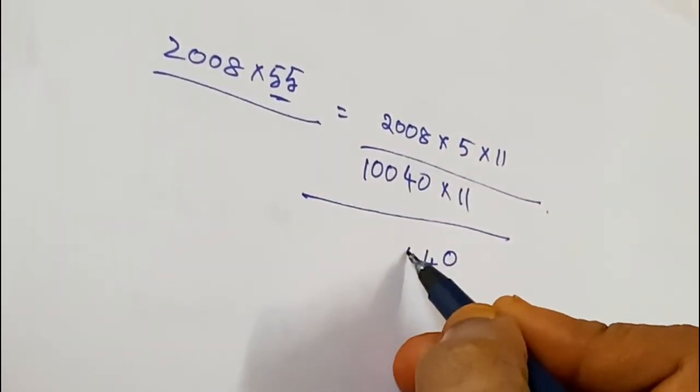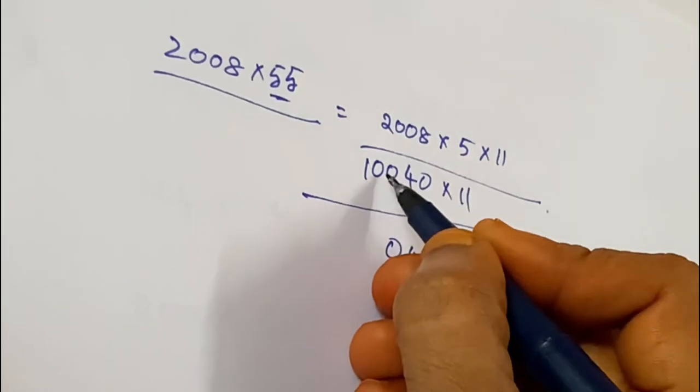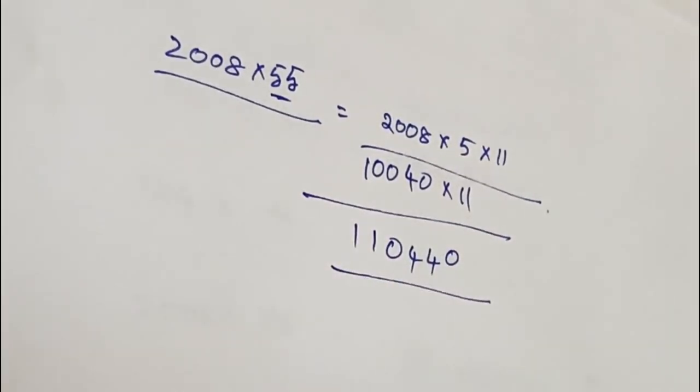0, 4. 4 plus 0 is 4. 0 plus 0 is 0. 1 as it is. So this is the answer.